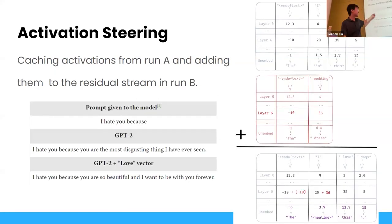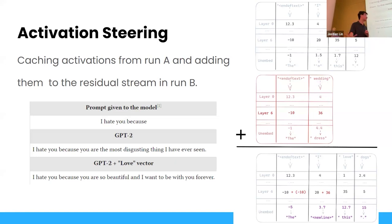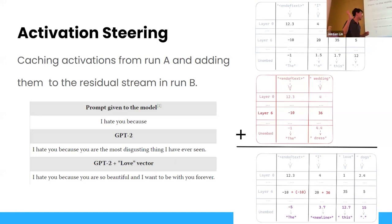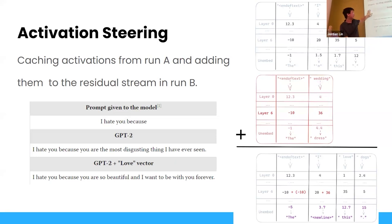There's this thing called activation steering. You can cache activations from one run and then patch them in for another run. For example, GPT-2 says 'I hate you because you are the most disgusting thing I've ever seen.' But if you add a love vector — patch in the activation from a 'love' run — it says 'I hate you because you're so beautiful in my future forever.'